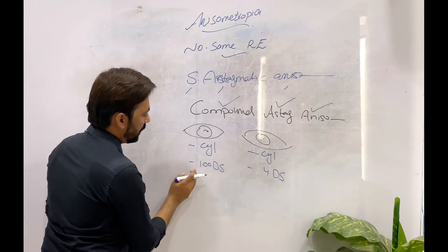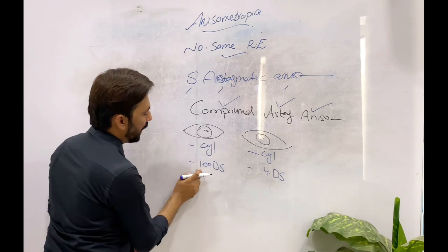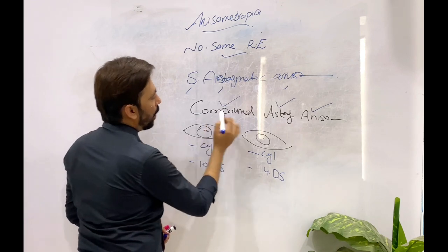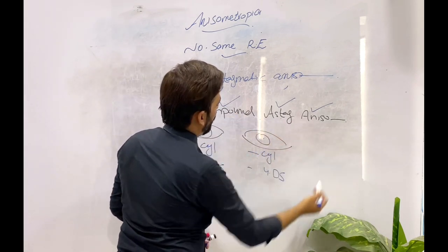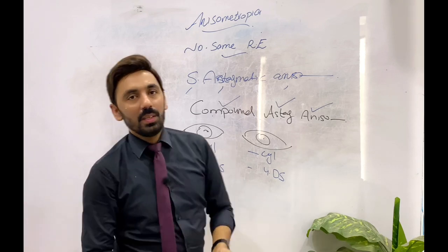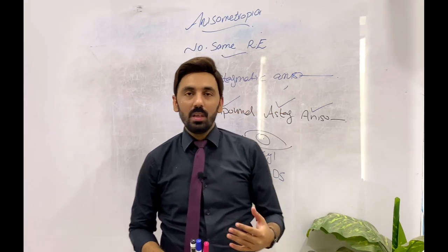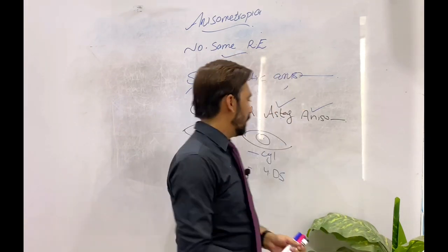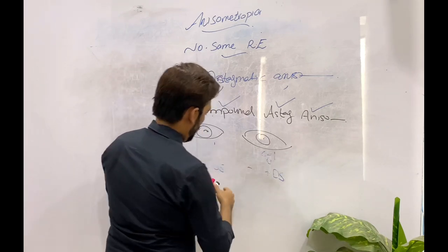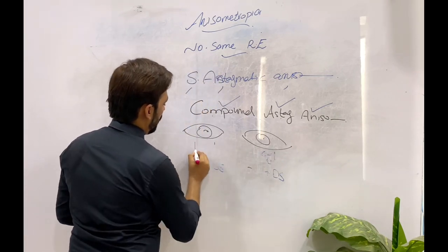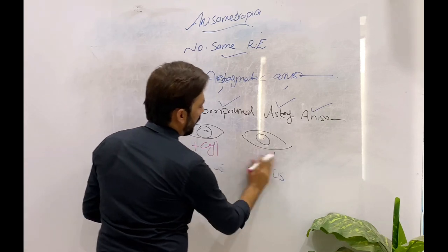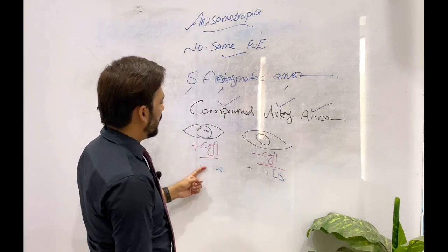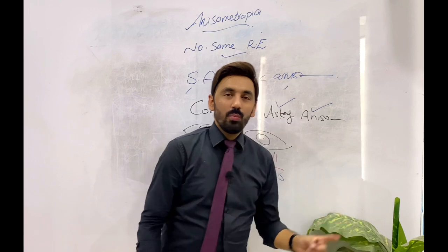The last type is mixed astigmatic anisometropia. In mixed astigmatic anisometropia, one eye has plus cylinder and the other eye has minus cylinder, with different powers. This condition is called mixed astigmatic anisometropia.